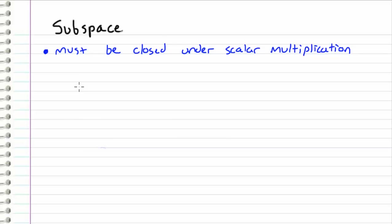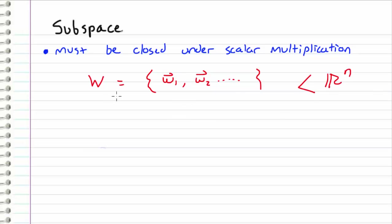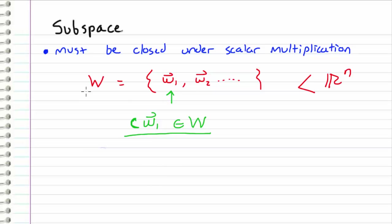The third rule is that a subspace must be closed under scalar multiplication. If W is a subspace of Rn, and we pick any vector in W — say W1 — and multiply it by a scalar C, then the scalar product C times W1 must also be an element of W. If this holds for all vectors in W, then W is closed under scalar multiplication.